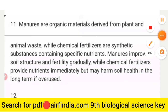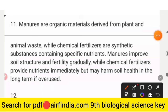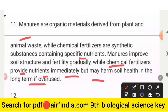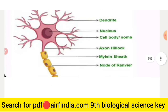Question number 11 answer: Manures are organic materials derived from plant and animal waste, while chemical fertilizers are synthetic substances containing specific nutrients. Manures improve soil structure and fertility gradually, while chemical fertilizers provide nutrients immediately but may harm soil health in the long term if overused.